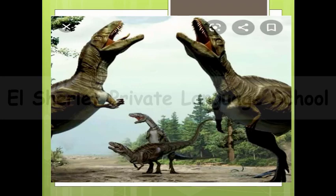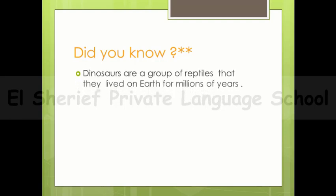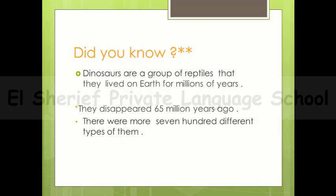From the picture you can see how huge this animal is. The word dinosaur, from the picture, means they are huge and they don't exist now. Did you know that dinosaurs are a group of reptiles that lived on Earth for millions of years? In the past, they disappeared 65 million years ago. There were more than 700 different types of them. Some could fly and others lived in the sea.